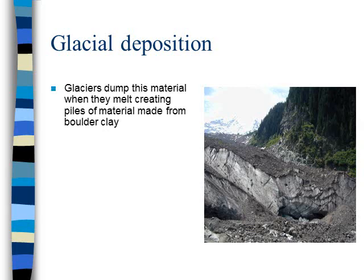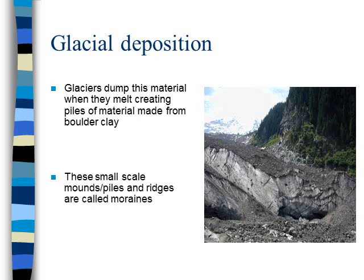Glaciers dump this material when they melt, creating piles of material made from boulder clay. These small-scale mounds often form ridges, and they are called moraines.